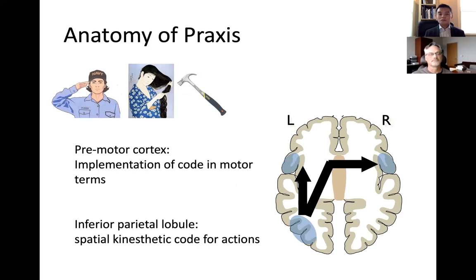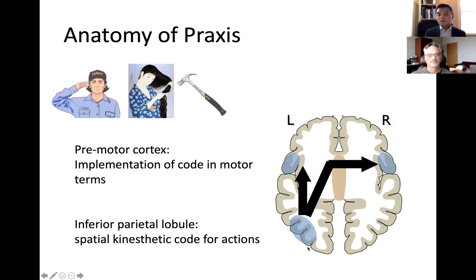How does this happen? There are a few regions to pay attention to. The first is the inferior parietal lobule, which is basically where all the information for those motor programs resides. Think of it as your sheet music for brushing your teeth, combing your hair, using a hammer — all that information about recognizing the right motions or performing them on your own lives in that area.